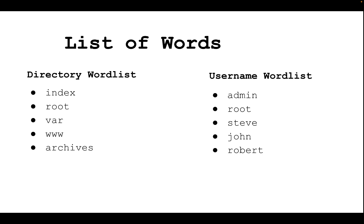If you look at John the Ripper, John will take a list of passwords, generate hashes, and compare them with the input hash. This is how John cracks passwords.